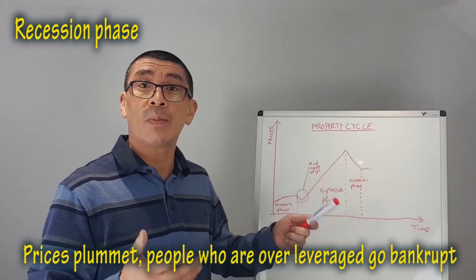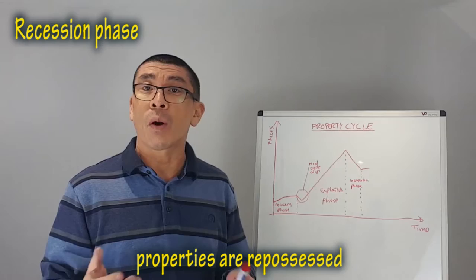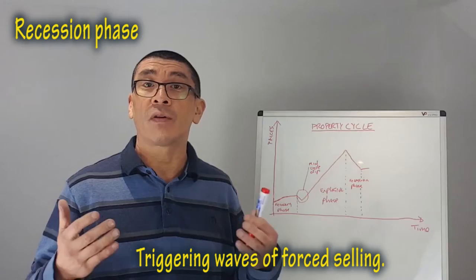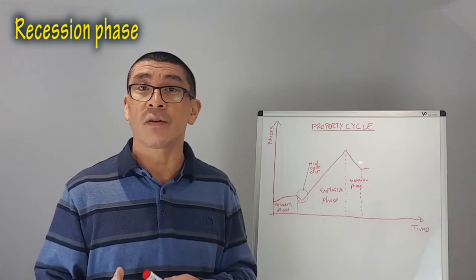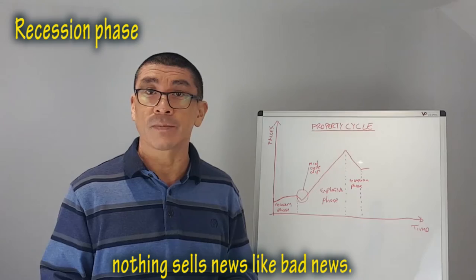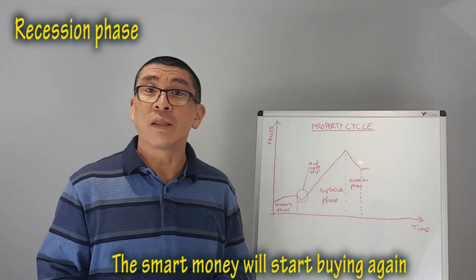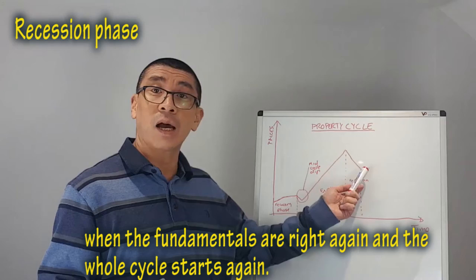People who are over-leveraged go bankrupt. Properties are repossessed, triggering waves of forced selling. The tipping point is hard to predict. The recession phase seems to last forever. Nothing sells news like bad news. The smart money will start buying again when the fundamentals are right again, and the whole cycle starts again.